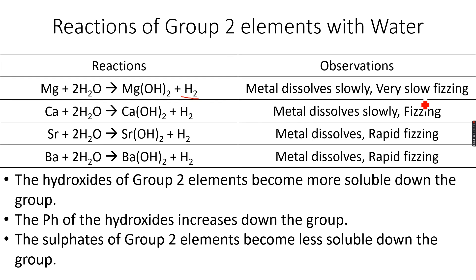In the case of calcium, we get calcium hydroxide again; the reaction is slow but faster than magnesium. We see a white suspension because calcium hydroxide is sparingly soluble. Strontium and barium hydroxides are quite soluble, and their reactions with water are very vigorous — we see rapid fizzing or effervescence. Reactivity and the pH of hydroxides both increase down the group.